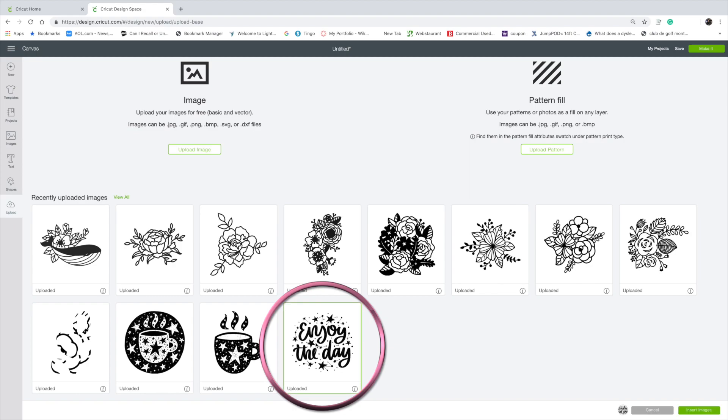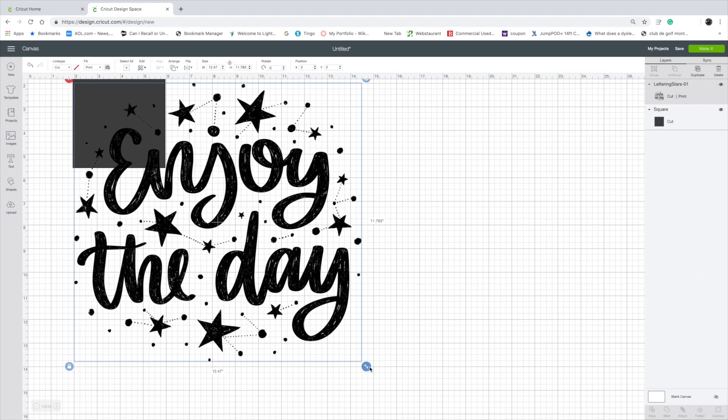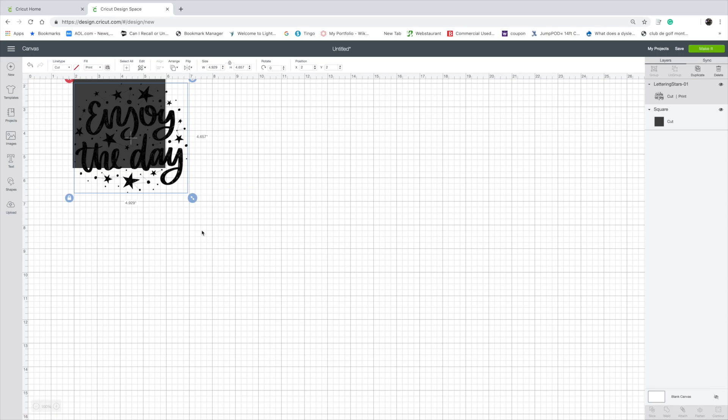Select the image and press insert image. Resize the image to how you want it to look on the tile.